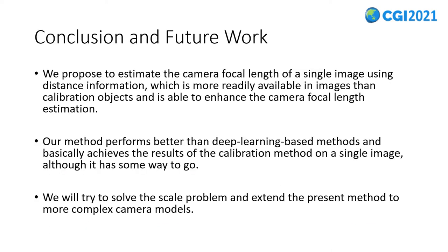Many computer vision tasks require camera intrinsics of images. Existing methods either require a specific object or still lack accuracy. We propose to estimate the camera focal length of a single image using distance information, which is more readily available in images than calibration objects, and is able to enhance the camera focal length estimation. Our method performs better than deep learning based methods, and basically achieves the results of the calibration method on the single image, although it has some way to go.